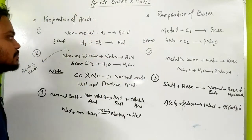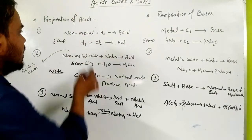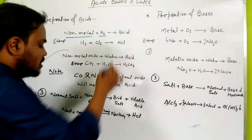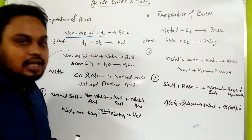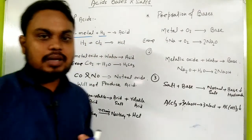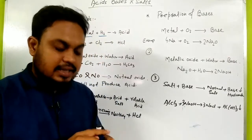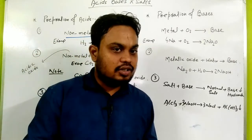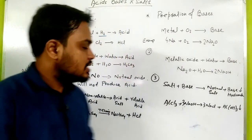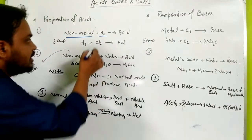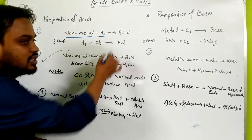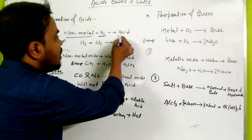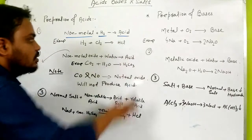The first preparation of acid is that non-metal reacts with hydrogen. Non-metals are those elements that contain 5, 6, or 7 electrons in their outer shell. When non-metal reacts with hydrogen, it forms acid.